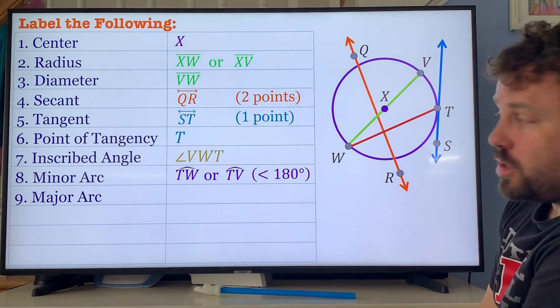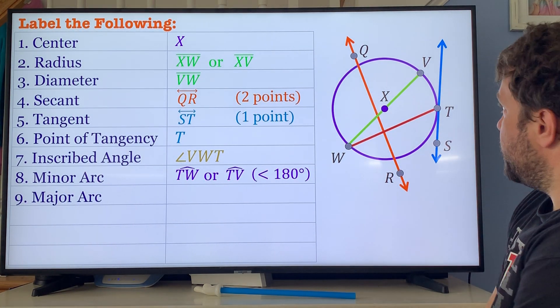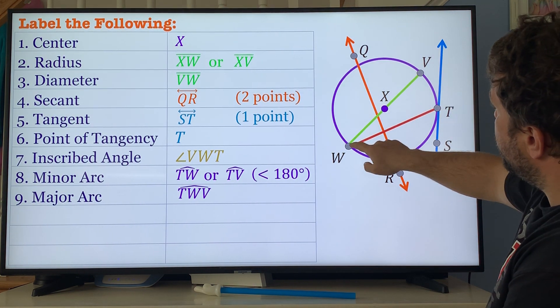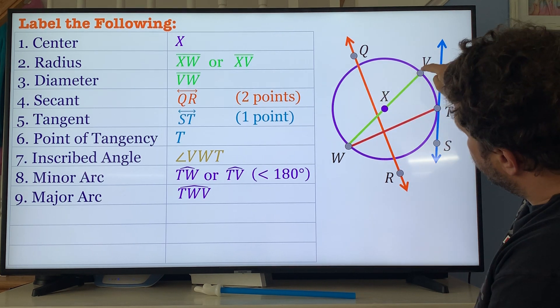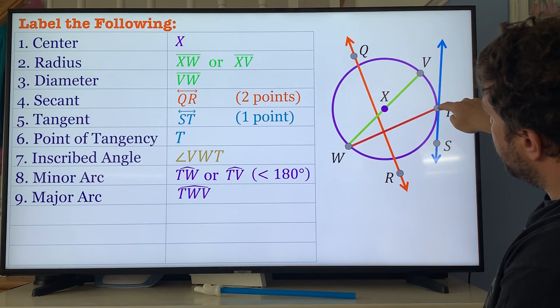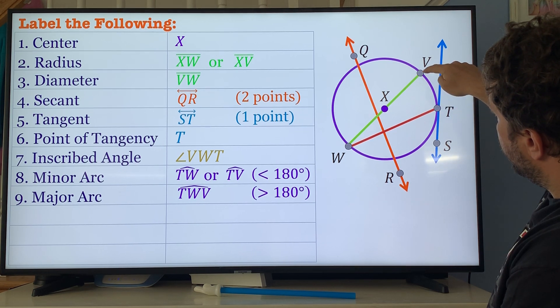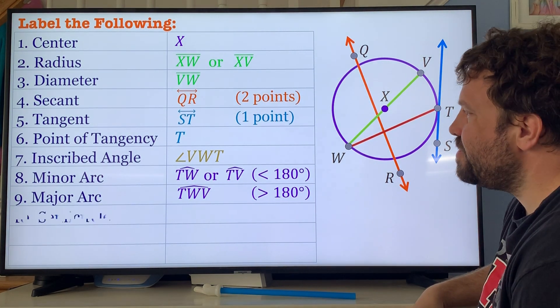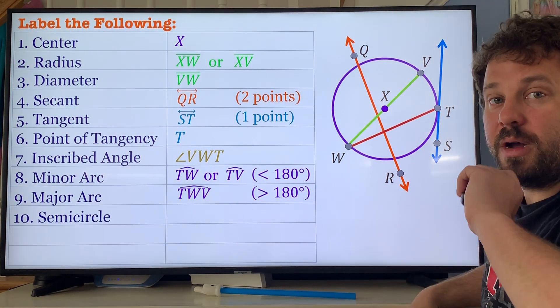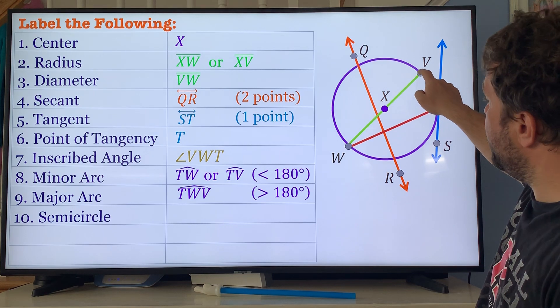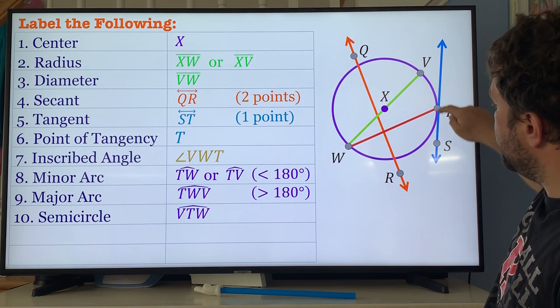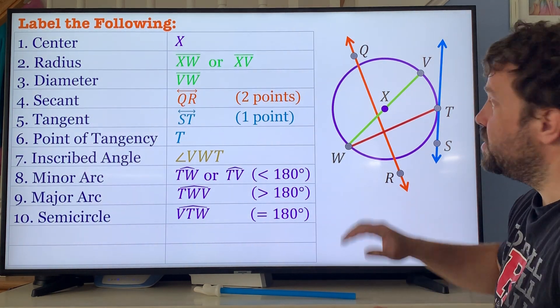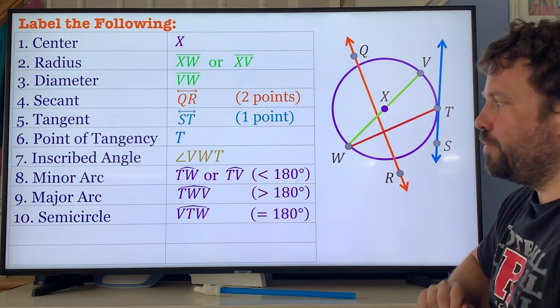You have a major arc. A major arc is an arc that is greater than 180 degrees. That would be arc RTWV, this arc right around there, or VWTR. You got one semicircle, 180 degrees, so that would be arc VW or VTW. Both are correct, semicircle created with a diameter.